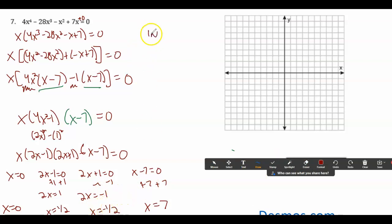So my intercepts are 0, 0, 1/2, 0, negative 1/2, 0, 7, 0. So my y-intercepts, I added a 0 at the end. So it's also 0, 0. Okay, and this is even and positive. So this ends up and up.